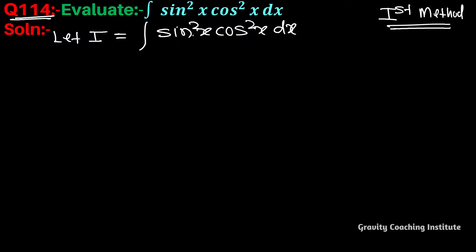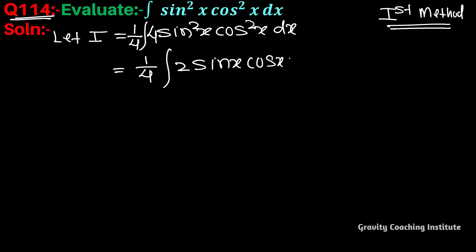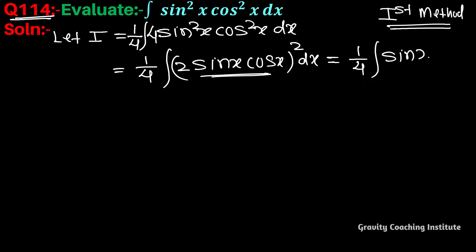If we differentiate sin x we get cos x, and differentiating cos x gives sin x — but sin²x will not be obtained directly. So we take a balance factor of one by four: one by four into integration of sin x into cos x whole square dx.